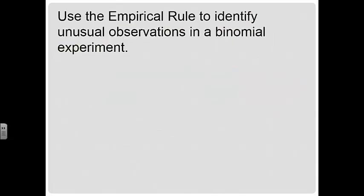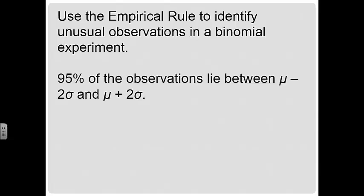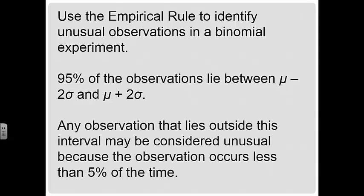We can use the empirical rule to identify unusual observations because we have that bell-shaped curve and it is symmetric. Remember that 95% of observations lie within two standard deviations of the mean, and we use 5% as our rule of thumb to determine whether something is unusual. Any observation outside that interval can be considered unusual because it occurs less than 5% of the time.